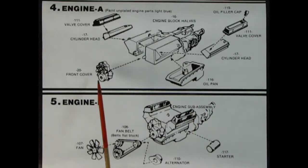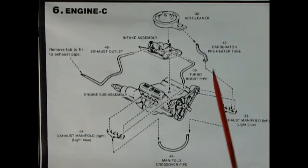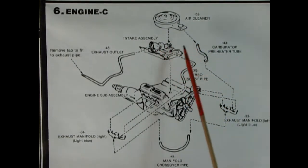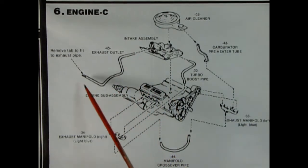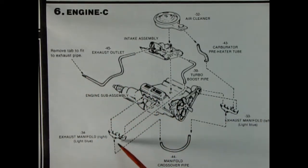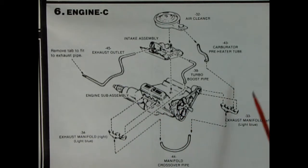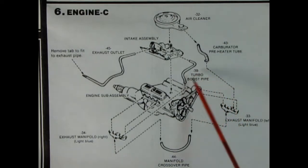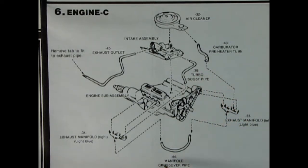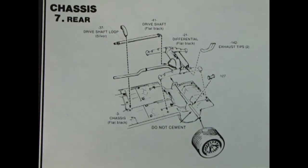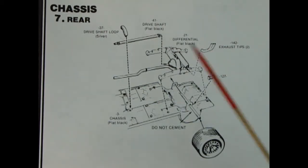Panel four shows engine assembly with valve covers, cylinder heads, left and right hand side engine block with transmission molded on the back, chrome oil pan and front cover. Engine assembly five has the starter, alternator, fan belt and fan. Panel six shows the air cleaner, exhaust outlet, exhaust manifold, carburetor preheater tube, turbo boost pipe and crossover manifold piece.